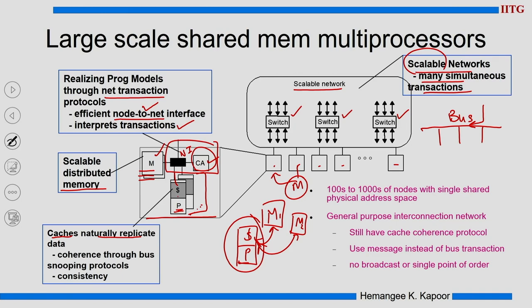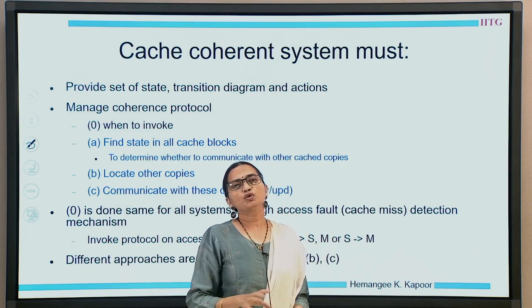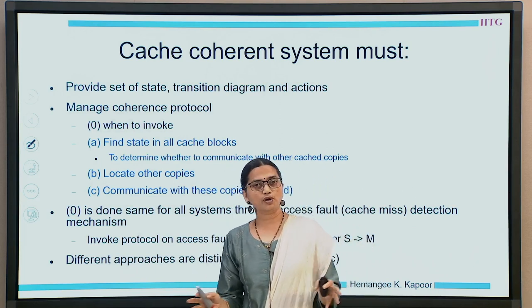Such a physical network can have 100 to 1000 nodes, and every node can be a single processor or a multiprocessor node, but we still need to solve the cache coherence problem. You could send messages instead of bus transactions because now we have a scalable network. That is the scale of problem we are talking about — in this scale, we are expected to maintain cache coherence. Recollect the snooping-based topic where we discussed a bus with 10 to 20 processor nodes; now that whole idea has to be brought into this big size system.